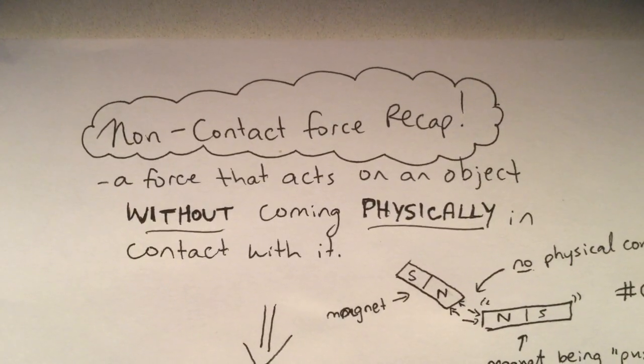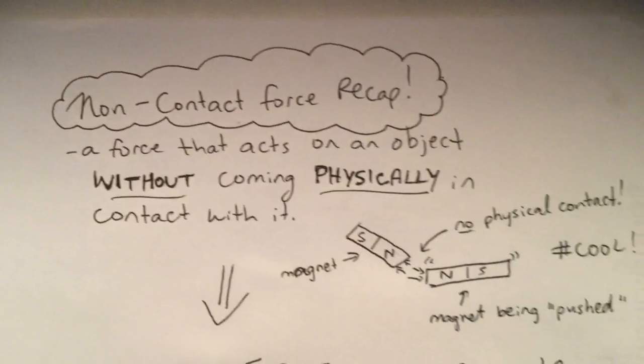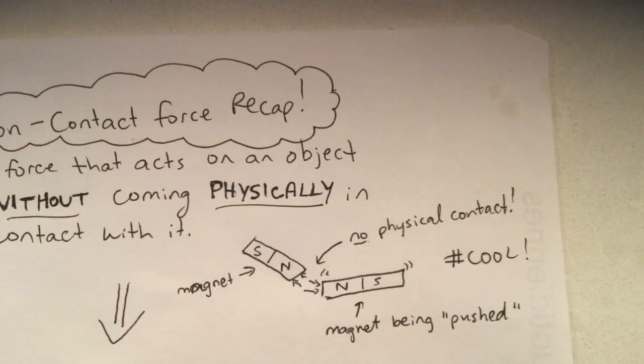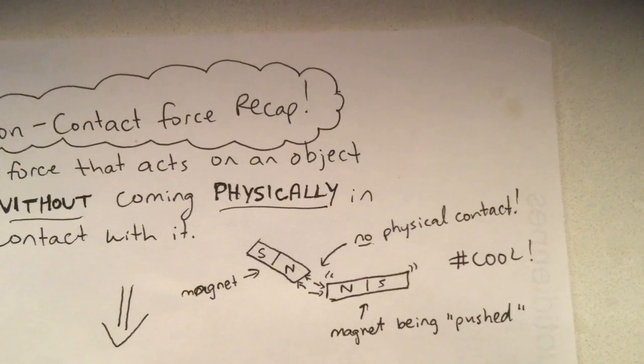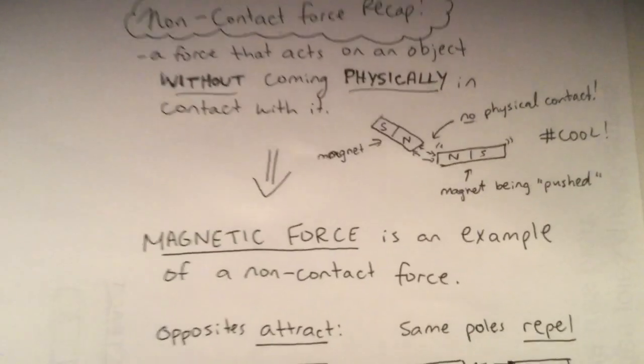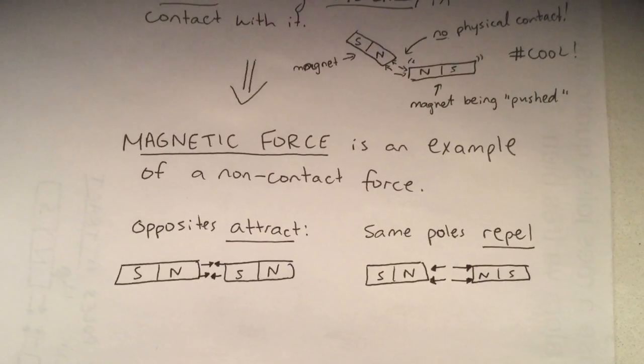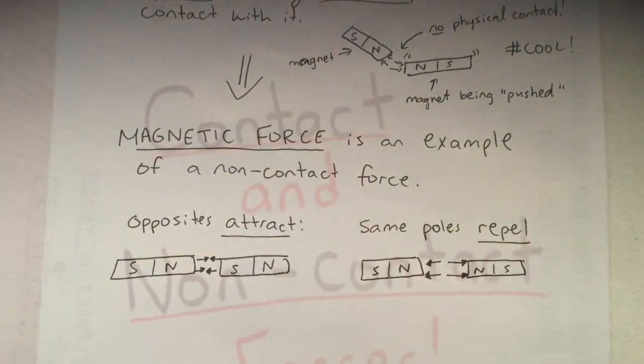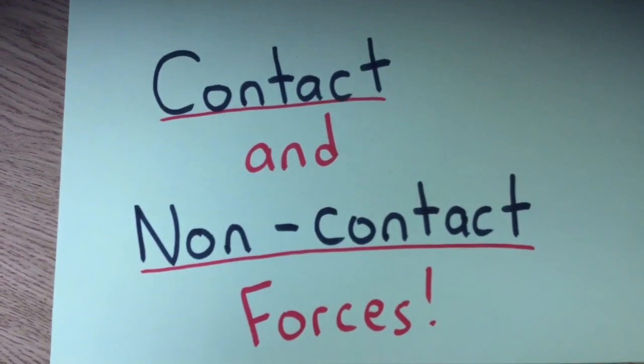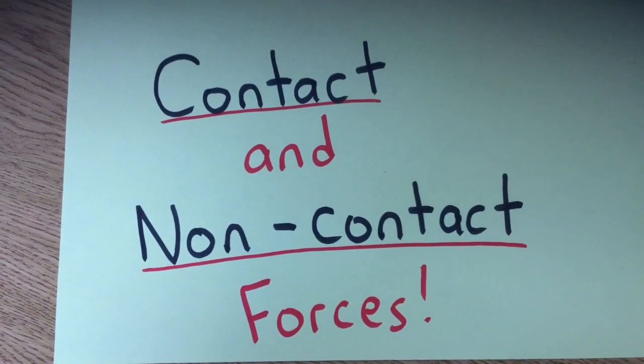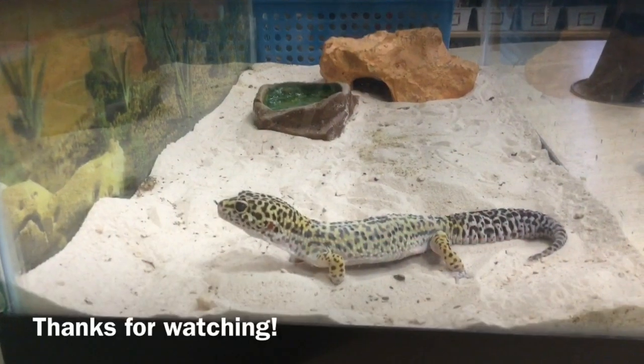A non-contact force is a force that acts on an object without coming physically in contact with it. Here is a picture of a magnet being pushed without any physical contact. Magnetic force is an example of a non-contact force. Remember that opposites attract and same poles repel. Great job! Now you know a little bit more about contact and non-contact forces. Thanks for watching!